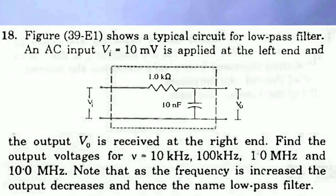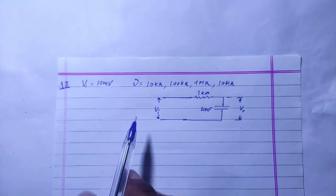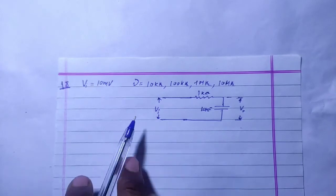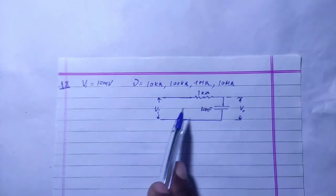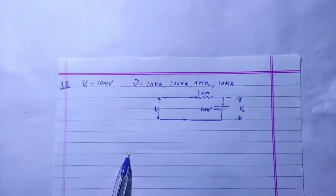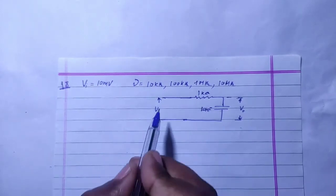In the low pass filter circuit, we apply a potential at the input. There is a resistance and a capacitance. The output voltage is taken across the capacitance. As frequency increases, the output decreases, which is why it is called a low pass filter. We will check this for four different frequencies.